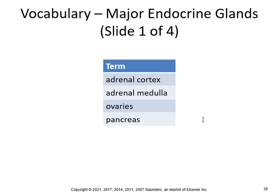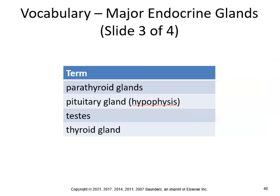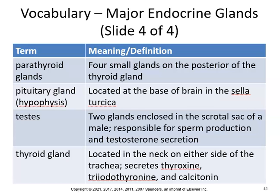Now let's look at the vocabulary. The adrenal cortex is the outer section of each adrenal gland, secreting cortisol, aldosterone, and sex hormones. The adrenal medulla is the inner section of each adrenal gland, secreting epinephrine and norepinephrine. The ovaries are located in the lower abdomen of the female, responsible for egg production and estrogen and progesterone secretion. The pancreas is located behind the stomach. The parathyroid glands are four small glands at the posterior of the thyroid gland. The pituitary gland is located at the base of the brain in the sella turcica, responsible for hormones. The testes are two glands enclosed in the scrotal sac of the male, responsible for sperm production and testosterone secretion. The thyroid gland is located in the neck on either side of the trachea, secreting thyroxine, triiodothyronine, and calcitonin.